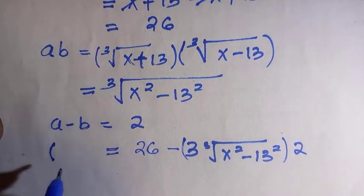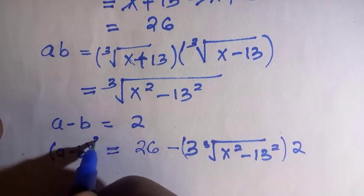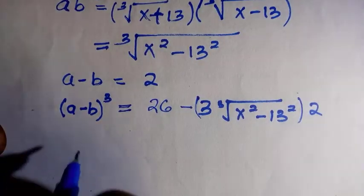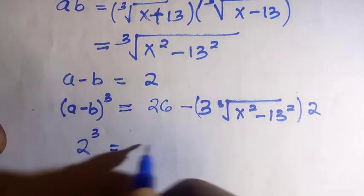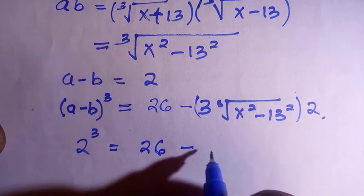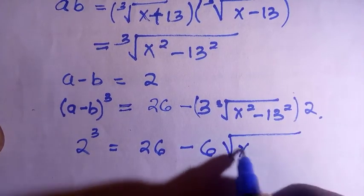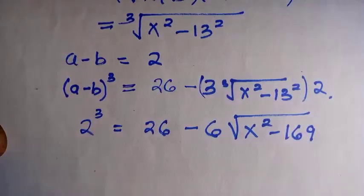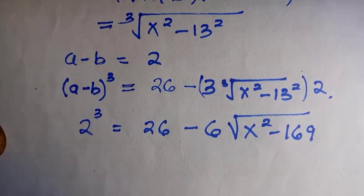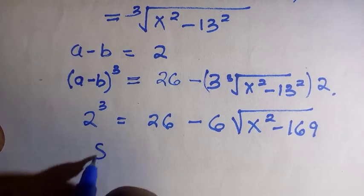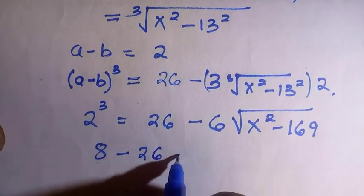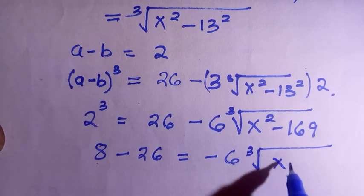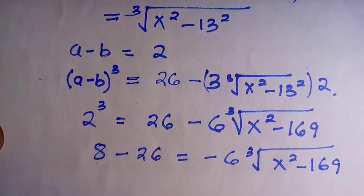So we have 2³ equals 26 minus 6 times the cube root of (x² minus 169). That gives 8 equals 26 minus 6 times the cube root of (x² minus 169). Rearranging: 8 minus 26 equals negative 18, so we get negative 18 equals negative 6 times the cube root of (x² minus 169).